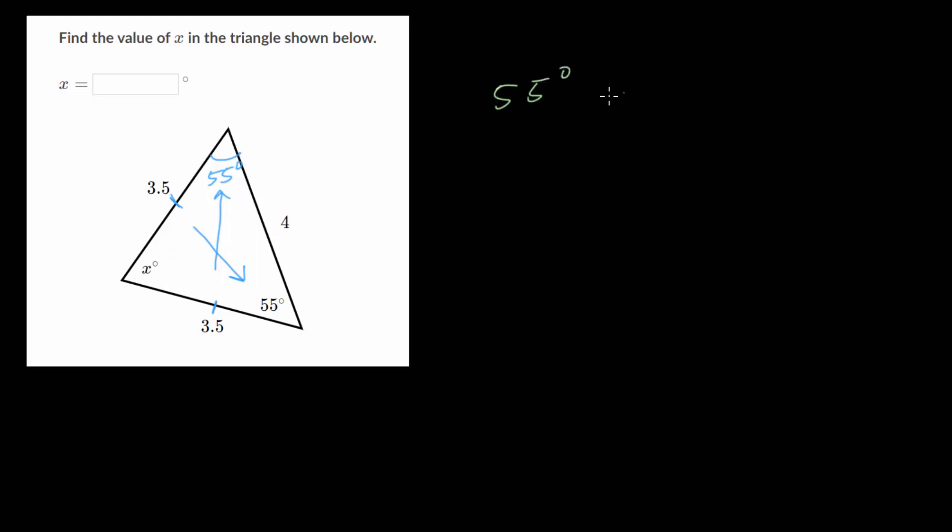Let's do one more of these problems and follow the same strategy. We just want to recognize which sides of our triangle are equal. These two sides are equal, so we have another isosceles triangle. We also know that the angles opposite those equal sides are going to be equal as well. So if this angle is 55 degrees, that means this one is also 55 degrees. Now that we know two of the angles, we can add them together and set their sum equal to 180 degrees to figure out what x equals. So: the 55-degree angle plus the other 55-degree angle plus our missing angle equals 180.